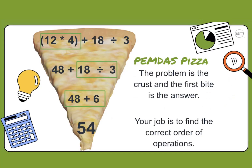Some people like to use PEMDAS or GEMDAS: G for grouping symbols, E for exponents, then MD — multiplication or division depending on which is on the left — and AS — addition or subtraction depending on which is on the left. We draw a slide for MD and AS to show they're interchangeable based on position.